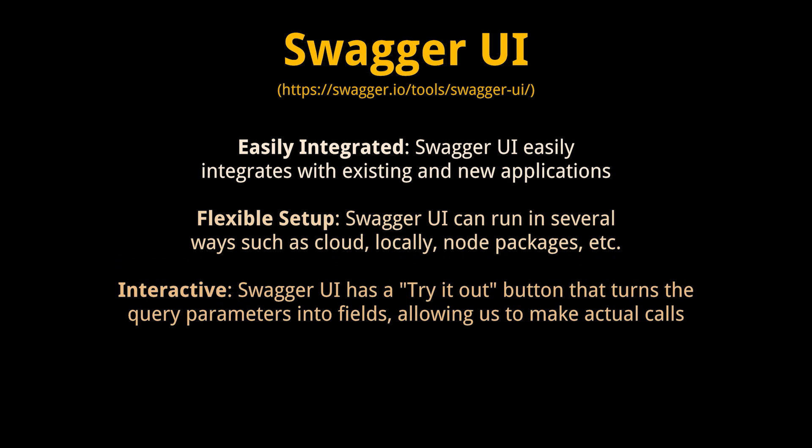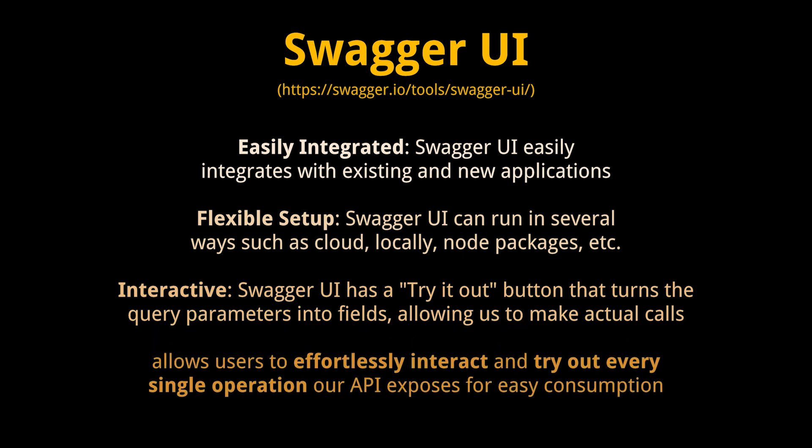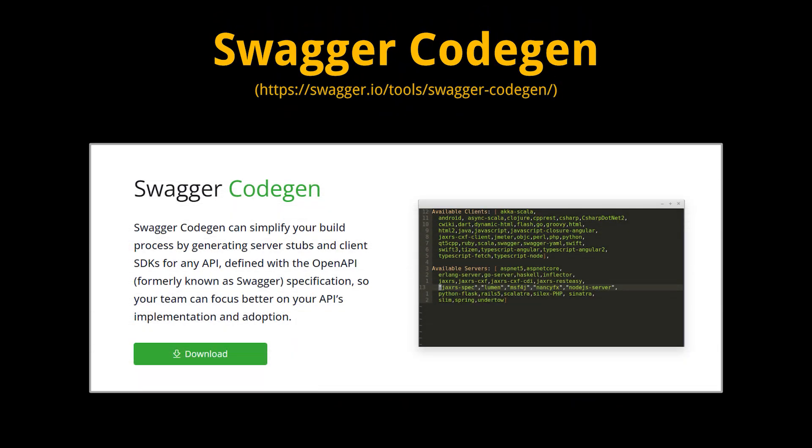Swagger UI has a 'Try it out' button that turns the query parameters into fields, allowing us to make a call against an actual API. By using Swagger UI to expose our API's documentation, we can save significant time. It also allows users to effortlessly interact and try out every single operation our API exposes for easy consumption.